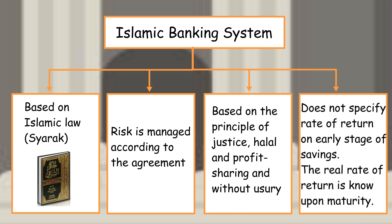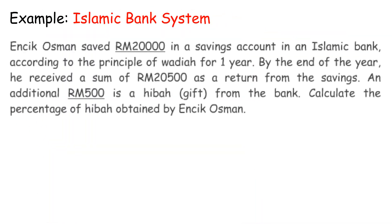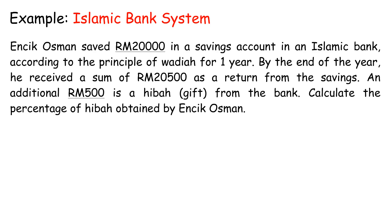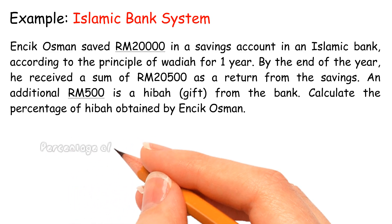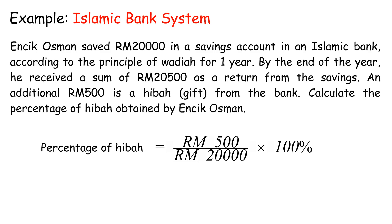Islamic banking does not specify the rate of return at the early stage of savings; the real rate of return is known upon maturity. Example: Encik Osman saved RM20,000 in an Islamic bank according to the principle of Wadiah for a year. By the end of the year, he received RM20,500. The additional RM500 is a Hibah (gift) from the bank. Percentage of Hibah equals RM500 over RM20,000 times 100%, equals 2.5%.